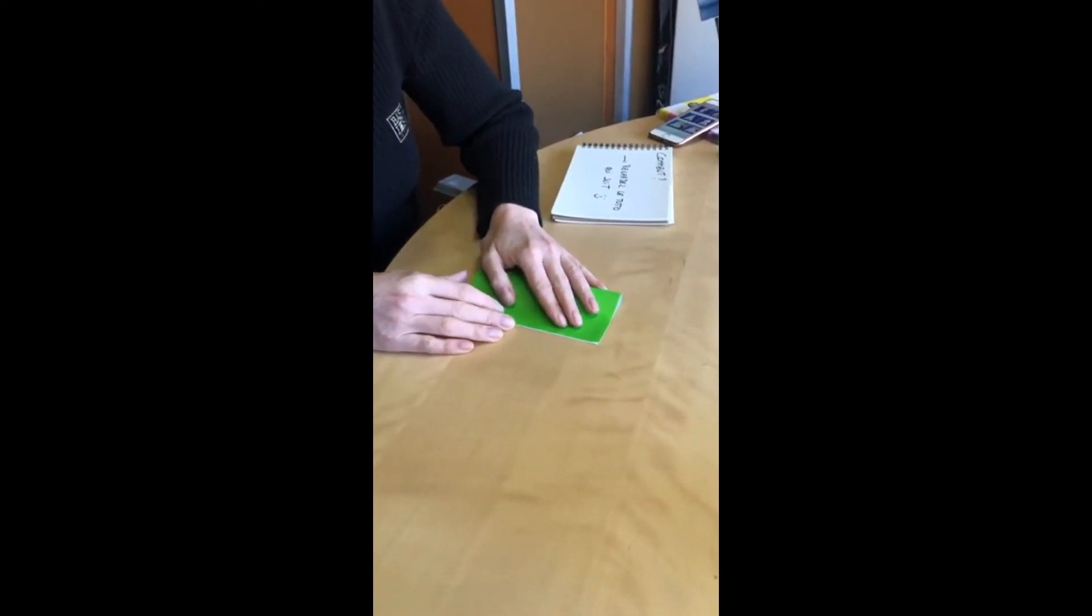Vous placez la partie colorée sur la table et vous la pliez en deux. On va juste marquer le pli.